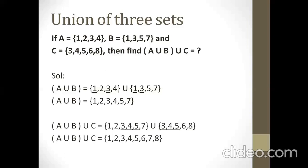Now, after finding A union B, we have to find A union B union C, which means we take the union of C with A union B. For this, we write the elements of set A union B, which are 1, 2, 3, 4, 5, 7, then the union symbol, then set C which is 3, 4, 5, 6, 8.